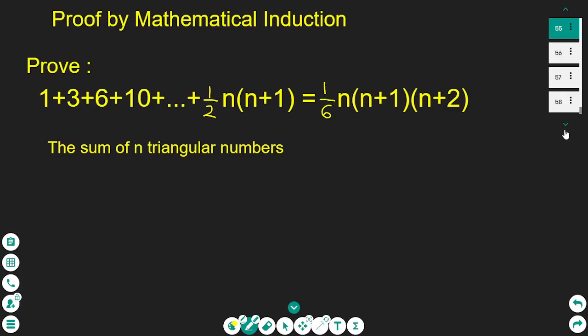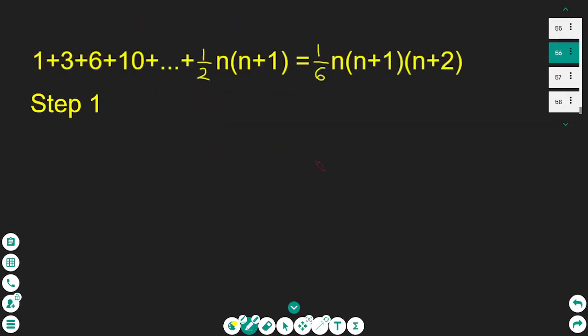Let's see the first step. The first step is to use the value of n equals 1. So we take the case when n takes a value of 1. We need to prove that the left hand side is the same as the right hand side. When n takes the value of 1, the left hand side...